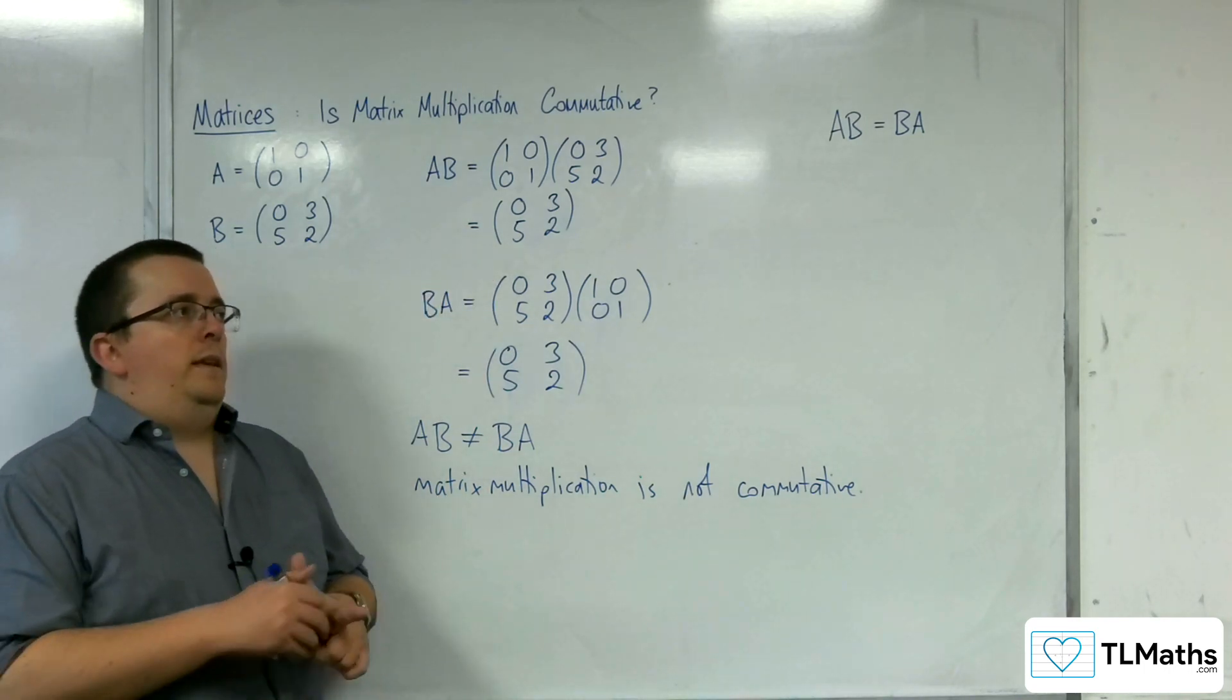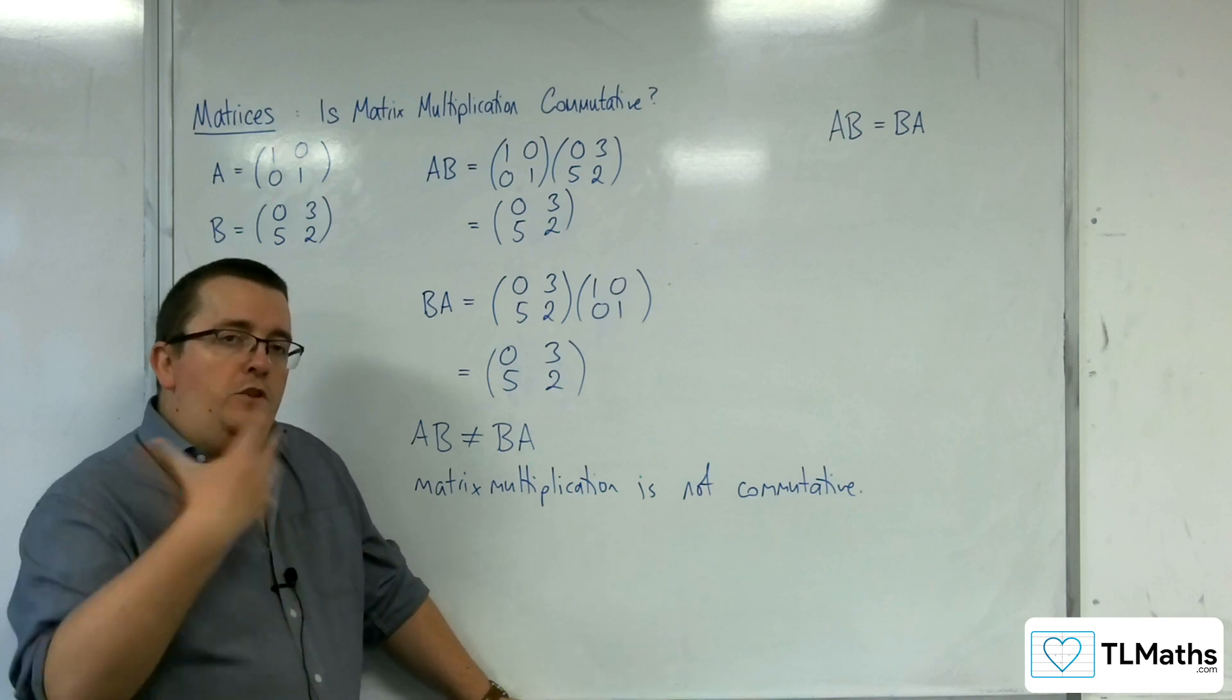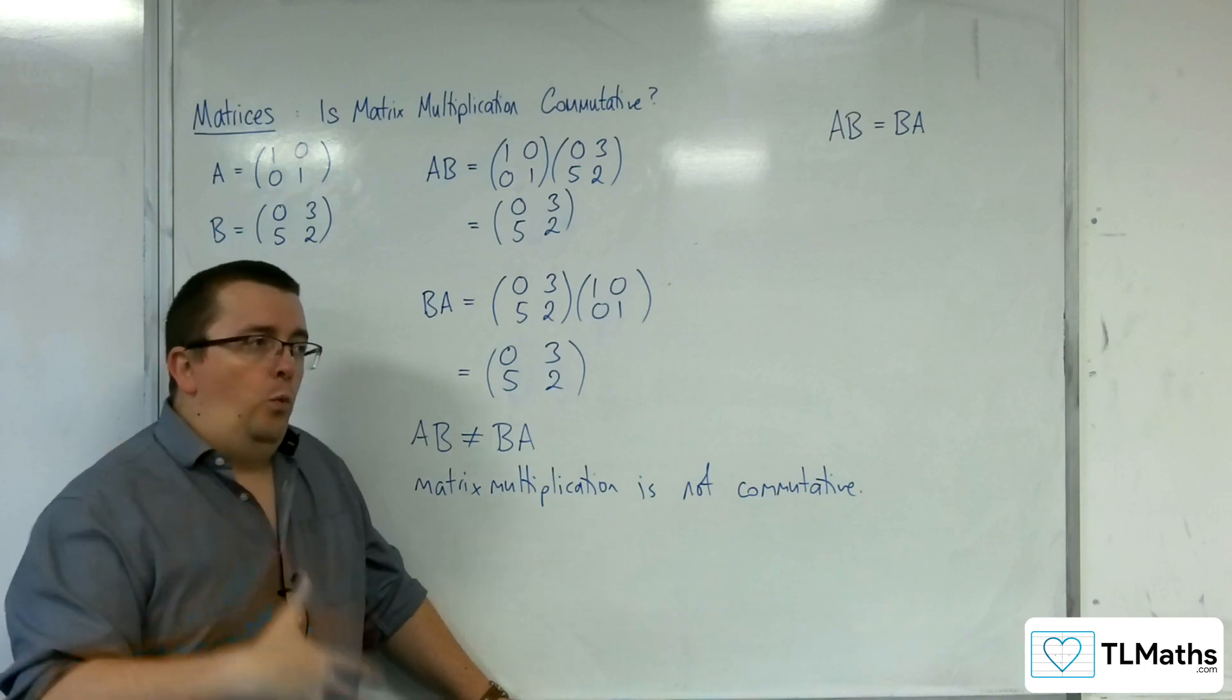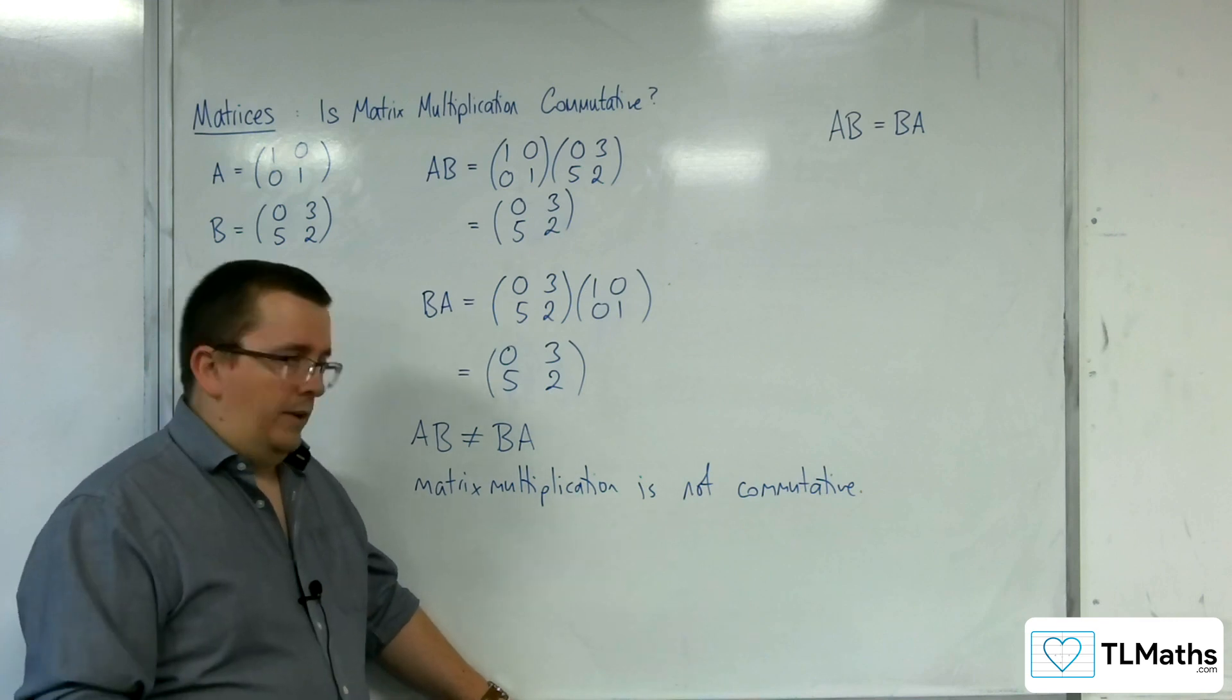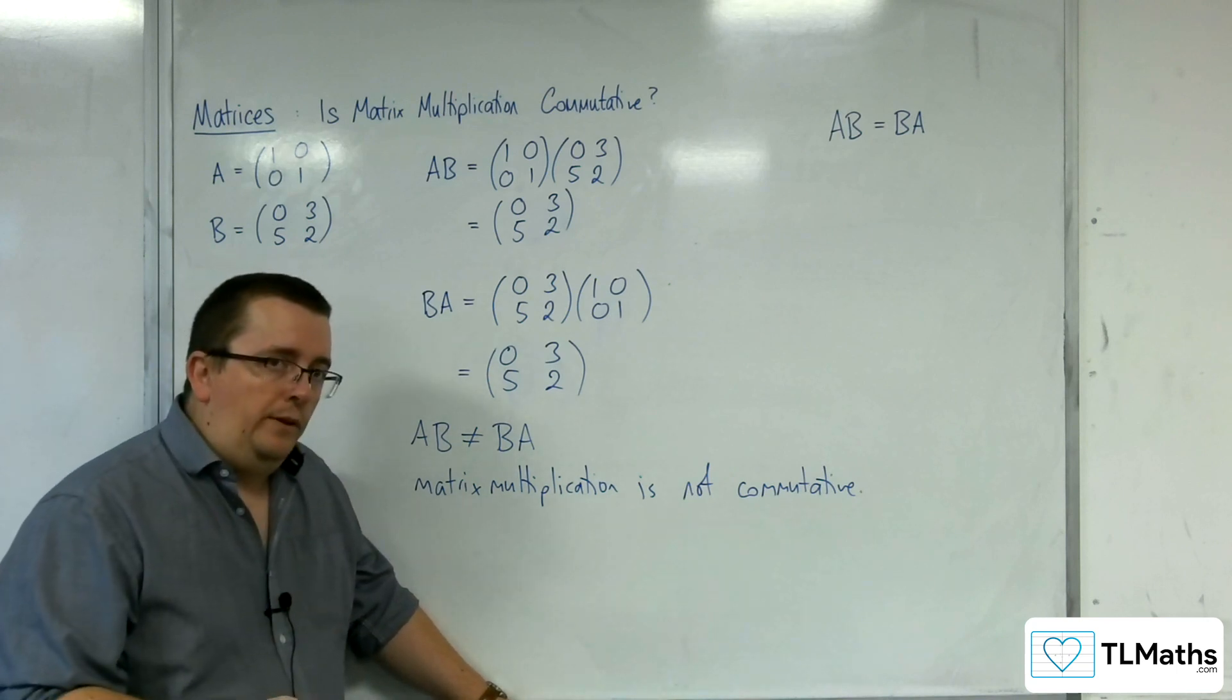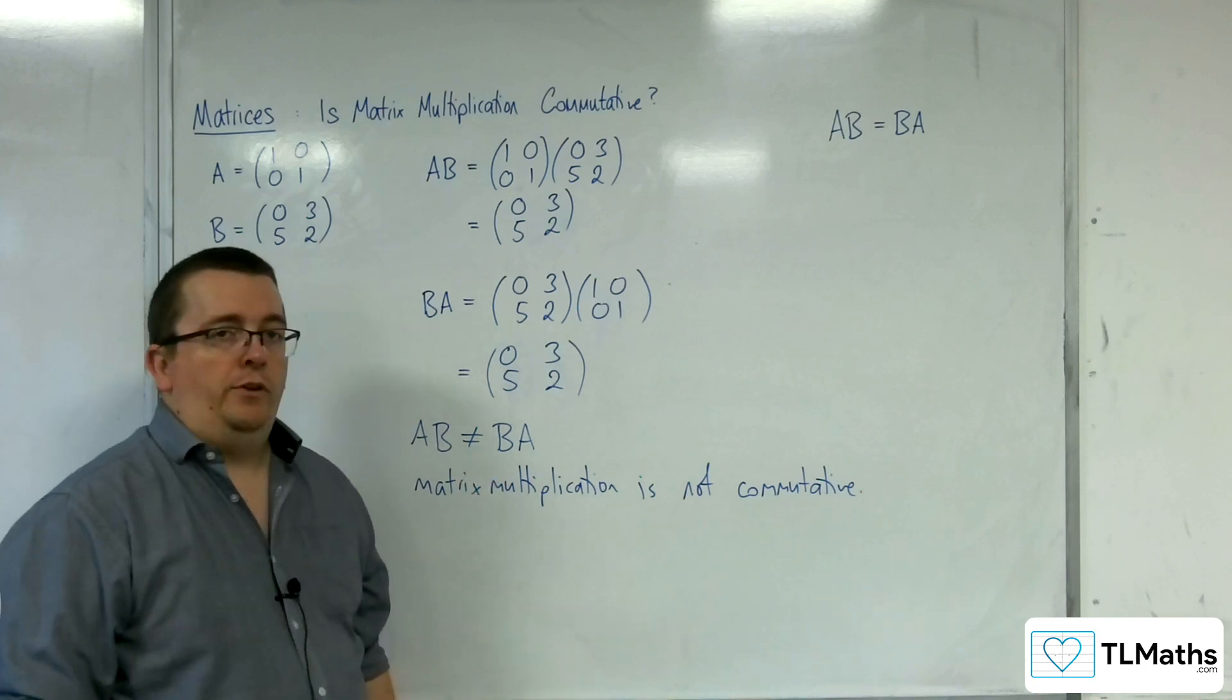So yes, what I said was true that you've got to be careful about the way around that you multiply matrices. However, it's not always the case that you will always get a different result, as this case clearly shows. However, because I could find one example where it fails, that means that we can safely say that matrix multiplication is not commutative.